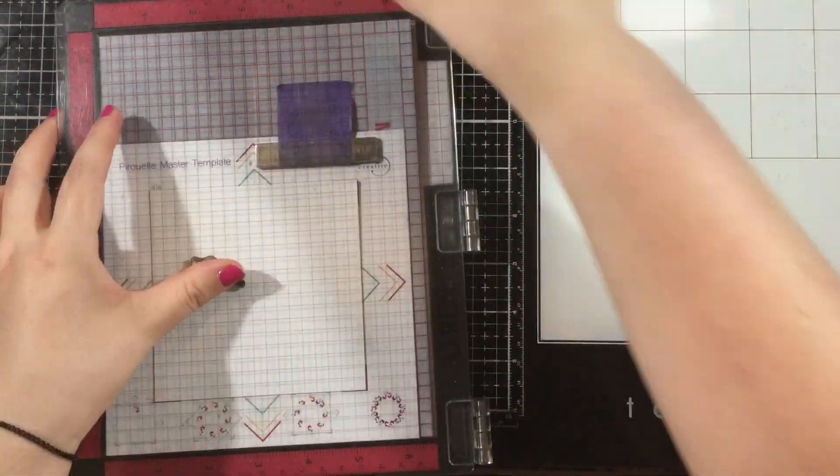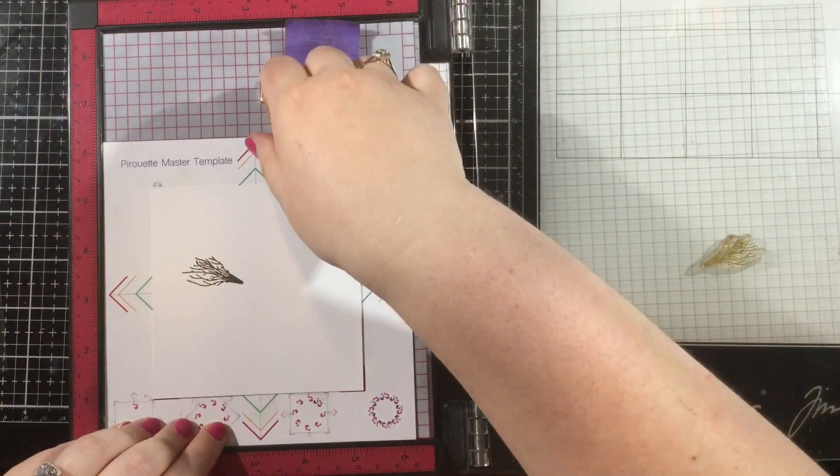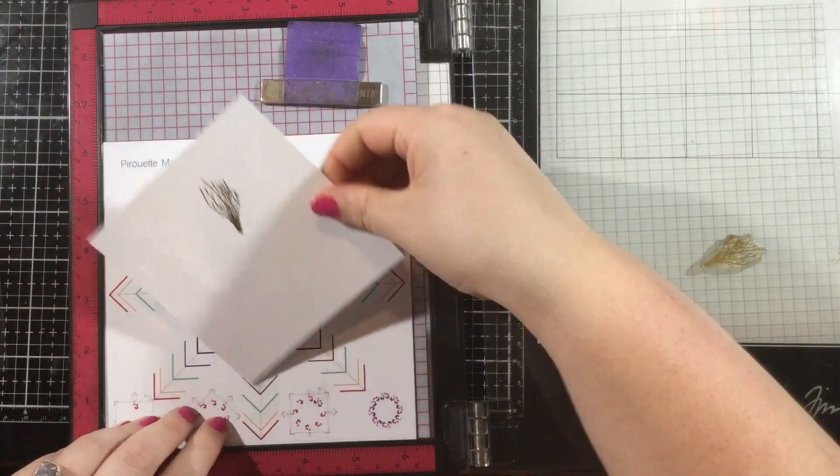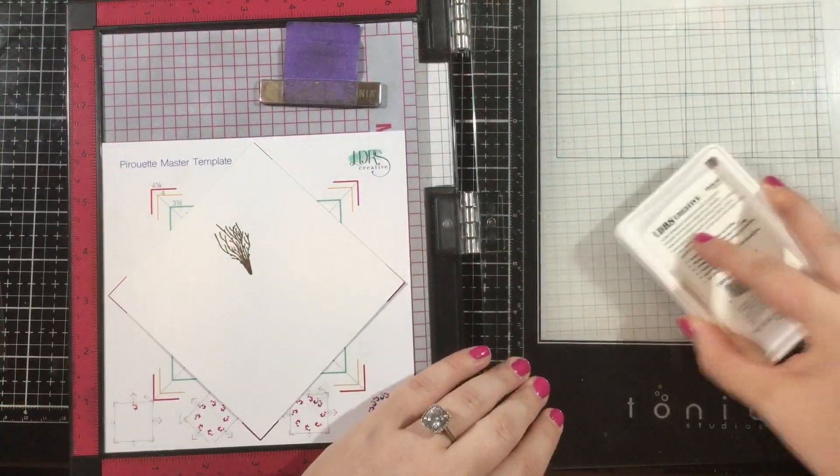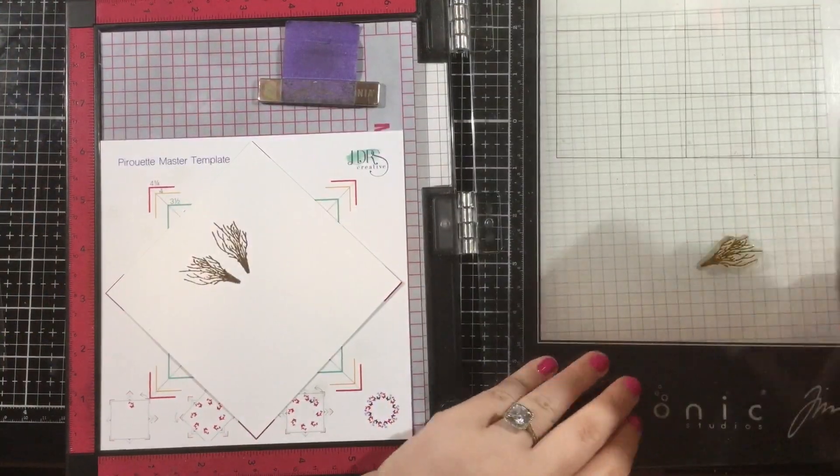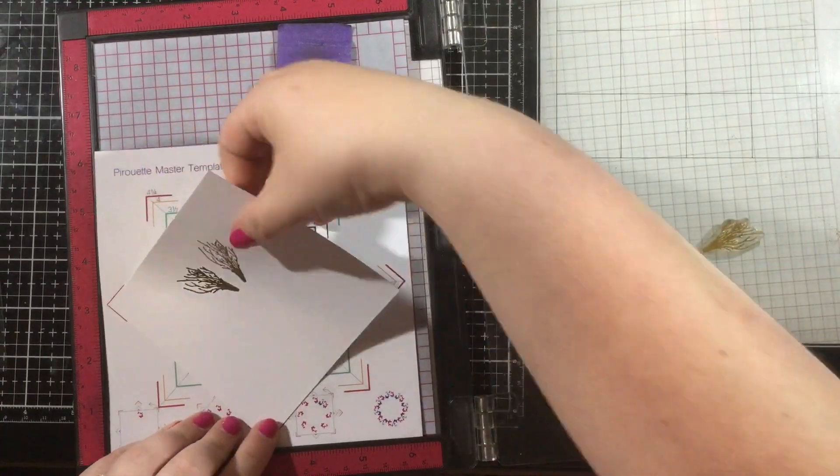Then I placed that overlay on top and line that up with the arrows on the left and the right, and that's going to show me exactly where to put my first image. You want to stay within those guidelines of the circle and then what you're going to do is just stamp.